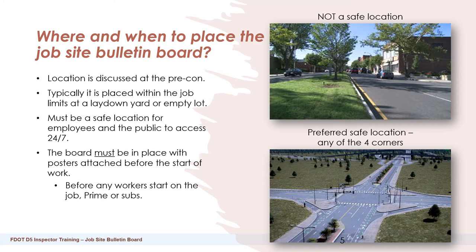Where and when to place the Jobsite Bulletin Board: the location is usually discussed at the pre-con. It is typically placed within the jobsite limits at a laid-down yard or an empty lot. It must be in a safe location for employees and the public to access 24-7, and the board must be in place with all required posters attached before the start of work. A safe location is one where no one has to go into an unsafe environment to access the board. A median is considered an unsafe location.